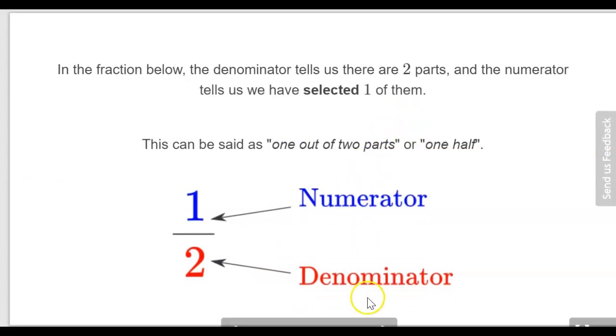The denominator always tells us how many total parts there are and the numerator tells us how many of those are selected. In our first example we had a shape with three parts and because one of them was shaded we had the numerator of one and the denominator told us how many total parts there were, and there were three.